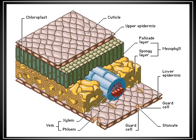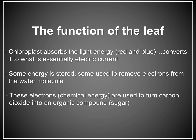Water vapor is also released at the stomate during the process of transpiration. The chloroplast absorbs light energy from the red and blue portions of the light spectrum, which is why we view foliage as green — it's the portion of the spectrum not absorbed by the chloroplast. Some of the energy absorbed is stored for future use, and some is used immediately to remove electrons from water molecules needed for the synthesis of carbohydrates, which are essentially the organic compounds the tree uses for its food.